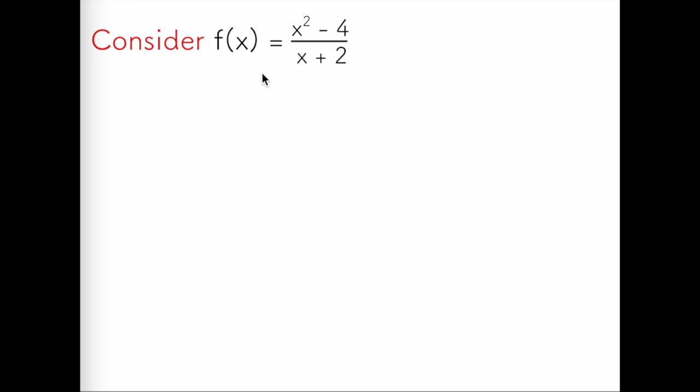If you're up to date on rational functions, you might say that this function has a vertical asymptote at x equals negative 2, and an oblique asymptote due to the higher power on x in the numerator than the denominator.